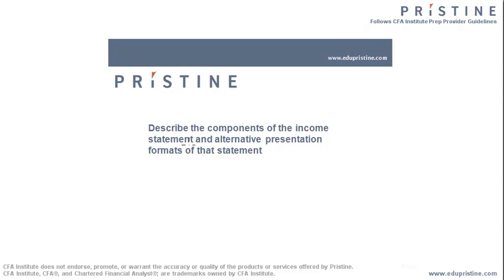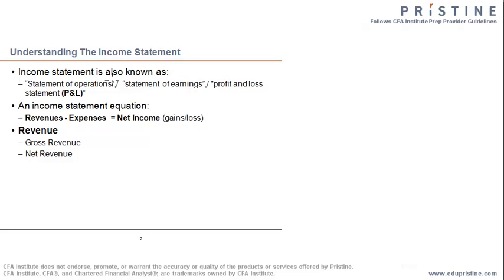This LOS basically talks about various components of an income statement and the different ways of presenting one. An income statement is known by different terminologies — some call it statement of operations, statement of earnings, or profit and loss account. The idea is that this statement talks about the various sources of income and expenses, with the net result being either a profit or a loss.